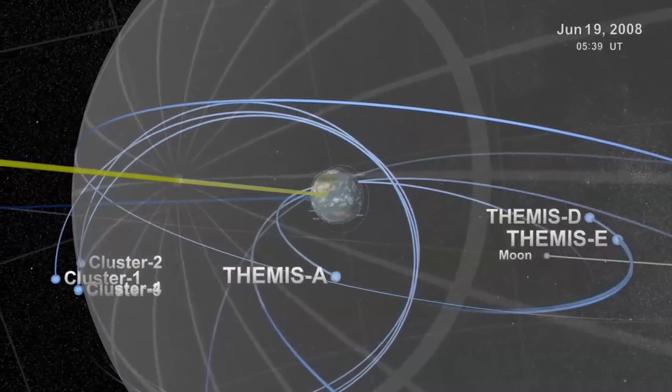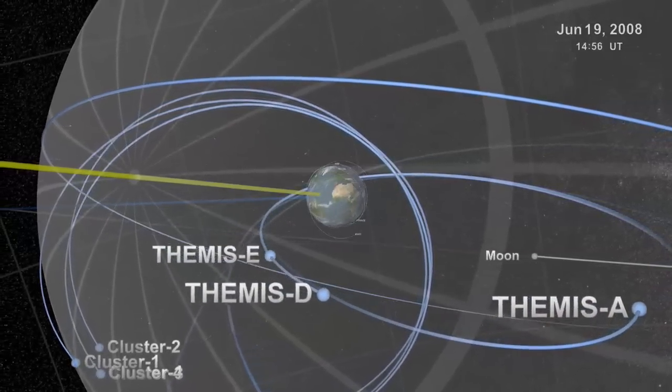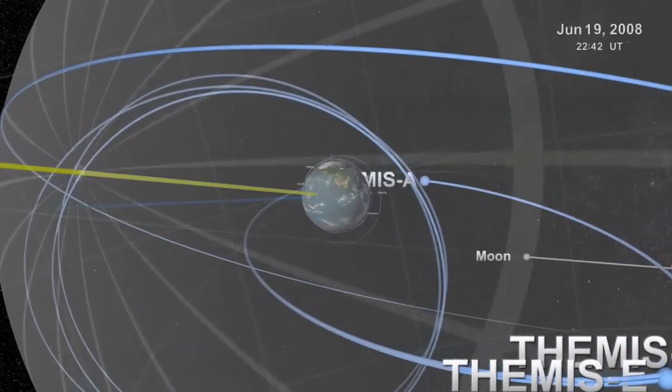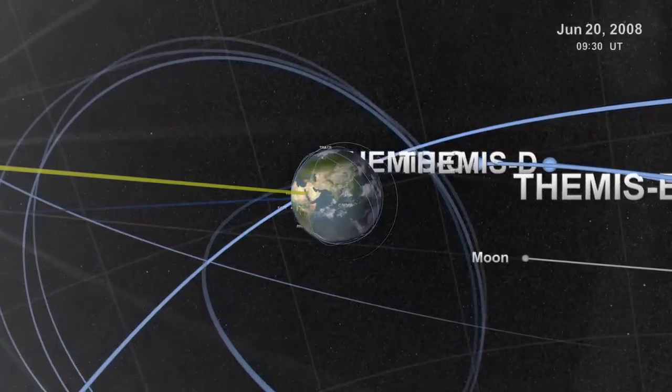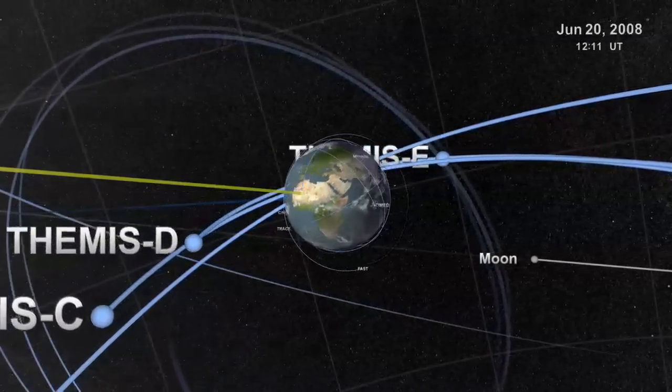New satellites have entered the dance, including the five Themis vehicles. The near-Earth fleet of satellites swarms like bees around a hive, some ranging out beyond the magnetosphere, some well inside.